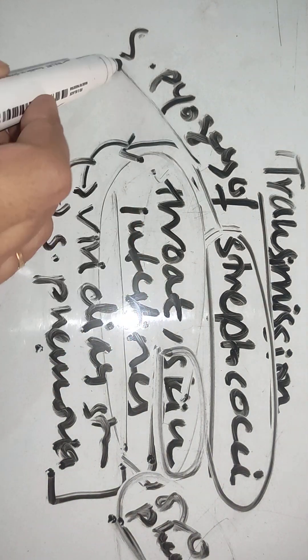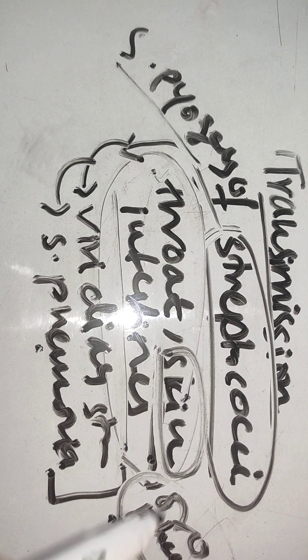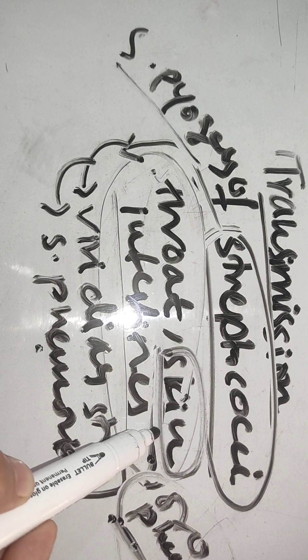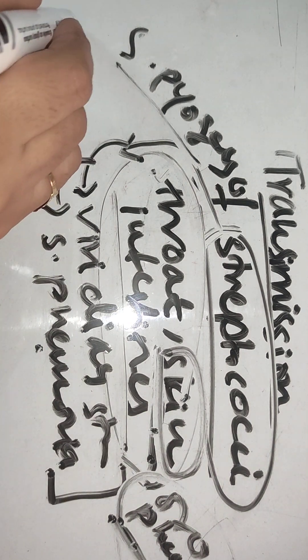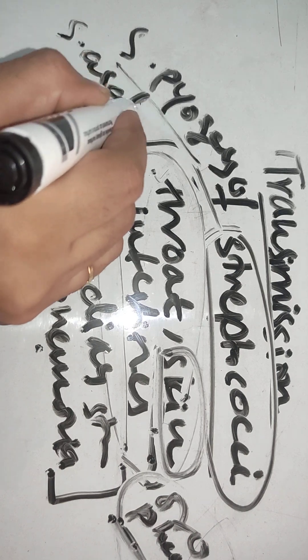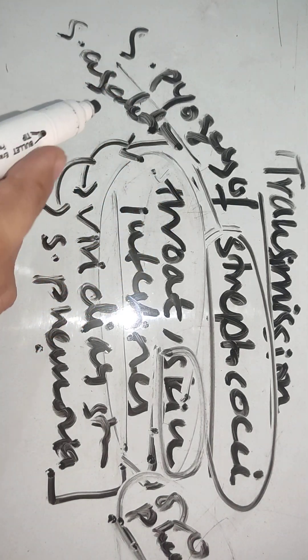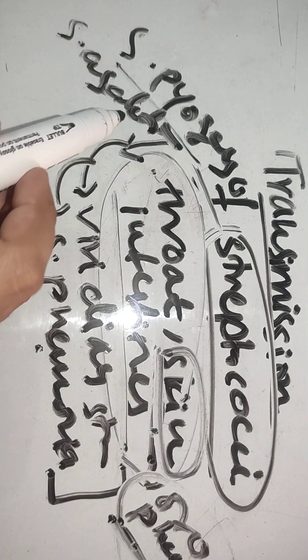Streptococcus pyogenes is found in small numbers in the oropharynx and in large numbers on the skin. Streptococcus agalactiae occurs in the vagina and colon. Enterococci and anaerobic streptococci are located in the colon.